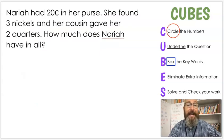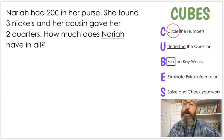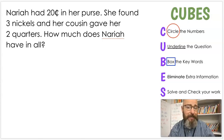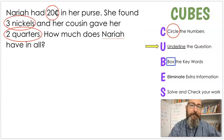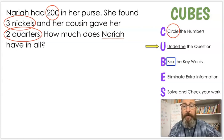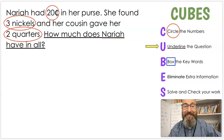You know, I always try to do at least three just to make sure we're getting used to it. We have another question. Naraya had 20 cents in her purse. She found three nickels and her cousin gave her two quarters. How much does Naraya have in all? So we know that first step is what? C. That's right. Circle the numbers. What are the numbers? Remember, it's a little bit trickier with money. That's right. I would circle 20 cents, three nickels, and two quarters because those are going to be worth numbers in a minute.